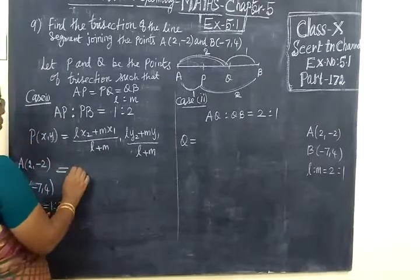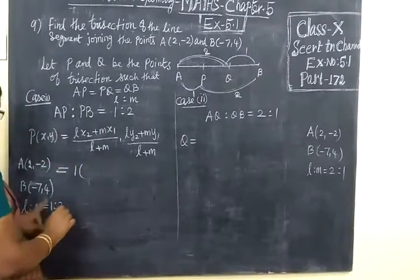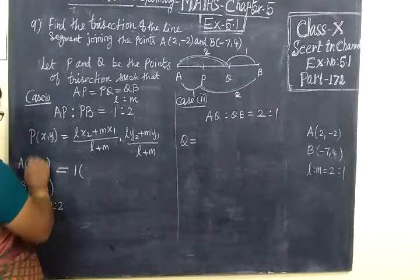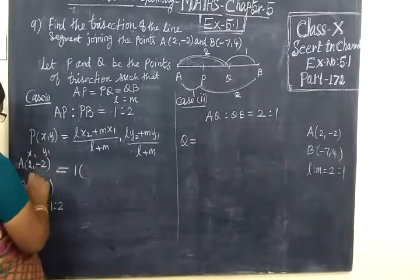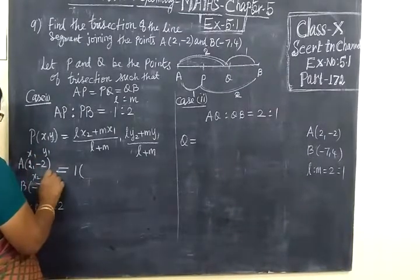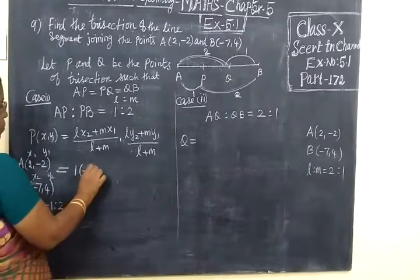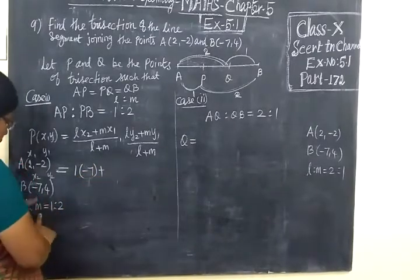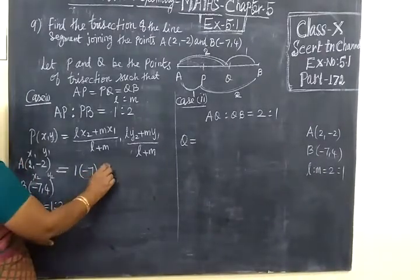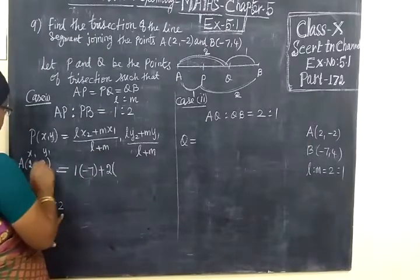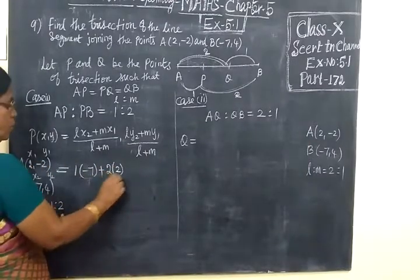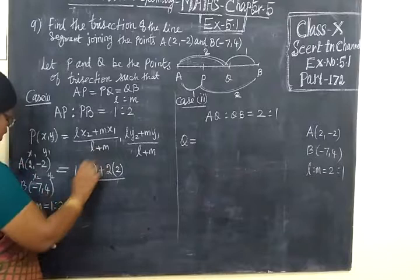L, 1, 1 bracket, X2. X2 is what? X1, Y1 and X2, Y2. So X2 minus 7 plus M. M is what? 2 bracket X1, X1 is 2, by L plus M, 1 plus 2.